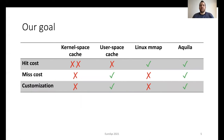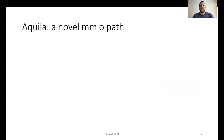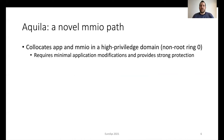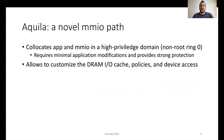Our work, named Aquila, overcomes all of the LinuxMAP disadvantages. We leverage the efficient hit path of memory-mapped I/O, and we provide an optimized miss path that removes the need for protection domain switches. We also enable customization in DRAM caching and device access, similar to a user space cache. Our approach combines the advantages of a user space cache and memory-mapped I/O. Aquila is a novel memory-mapped I/O path that collocates the user application and the memory-mapped I/O path in a high-privileged domain, known as ring 0 in Intel terminology. Our approach requires minimal application modifications and provides strong protection semantics similar to Linux memory-mapped I/O. Aquila also reduces significantly software overheads in the memory-mapped I/O path.